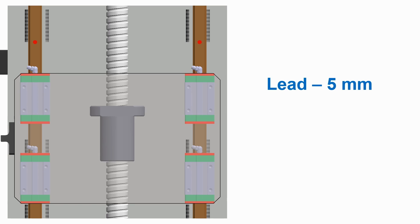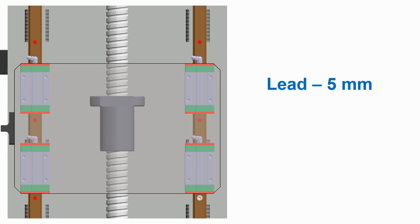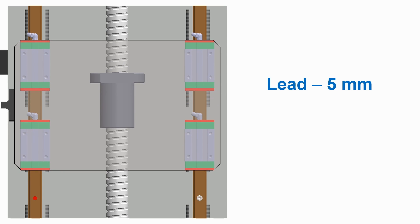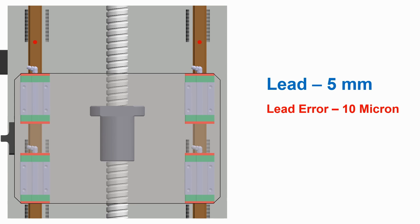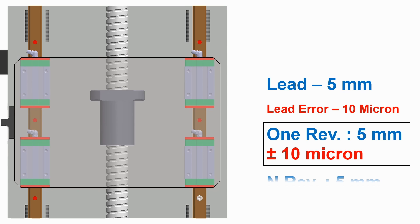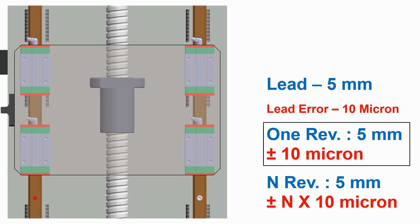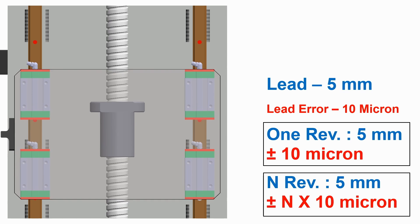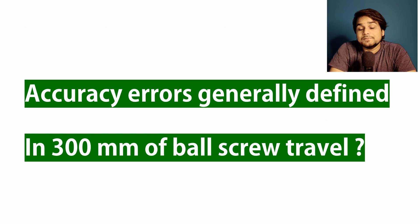For example, if we select a ball screw with a lead of 5 mm, the nut should travel 5 mm linearly per revolution. But there will be some error in microns — it cannot be exactly 5 mm. As the nut takes more revolutions, this small error stacks up at every revolution. Ball screw manufacturers generally define this amount of error per 300 mm of travel.